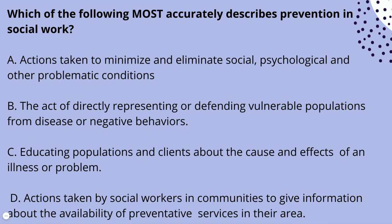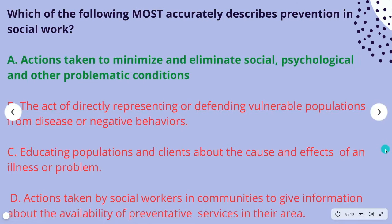We eliminate B — the act of directly representing or defending vulnerable populations — because in prevention work, as you move up the triangle, there are different ways to defend vulnerable populations other than just directly representing them. That's not an accurate description; there are a lot of words used as distractors. That leaves us with answer choice A: actions taken to minimize and eliminate social, psychological, and other problematic conditions. Prevention work is all about minimizing and containing — A is the most accurate description of prevention in social work. This was a tough one.